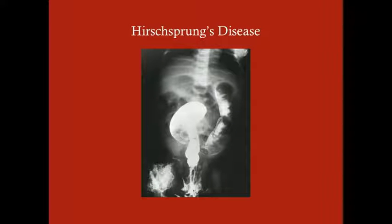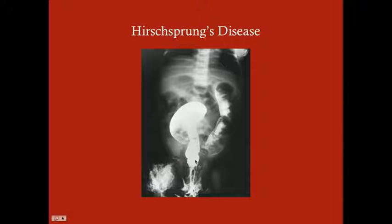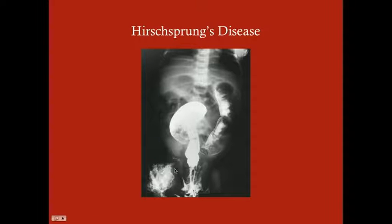Here's Hirschsprung's disease restricted to the rectosigmoidal area. You can see contrast going up with a somewhat dilated sigmoid but a very constricted rectal area.